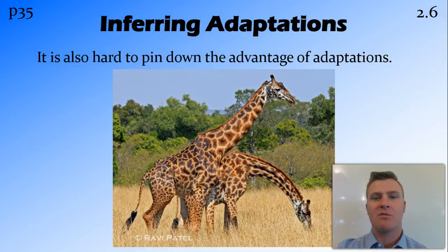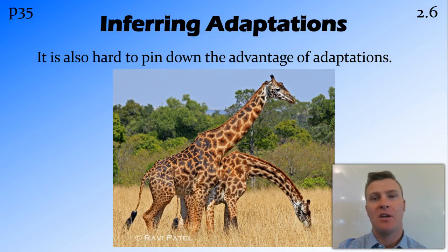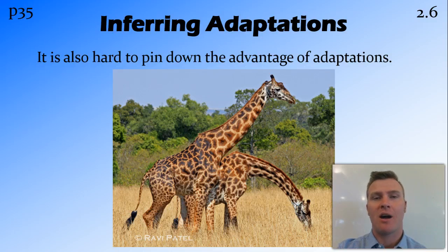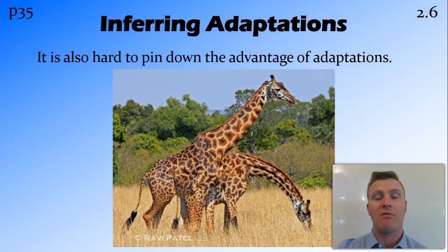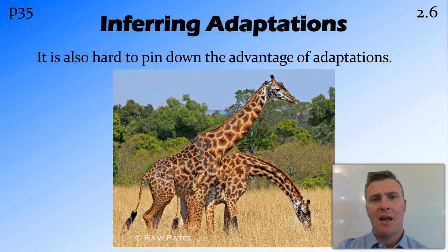Even for quite obvious adaptations it can be really hard to pin down why an organism has that adaptation and what makes them suited to their environment. An example is a giraffe having a long neck. It was thought for many years that giraffes had long necks so they could reach higher up in the trees and eat leaves other animals couldn't get to. But we later discovered this isn't true, because most of the time giraffes eat off the ground. So they quite obviously have an adaptation other animals don't have, but working out why is a little bit tricky.